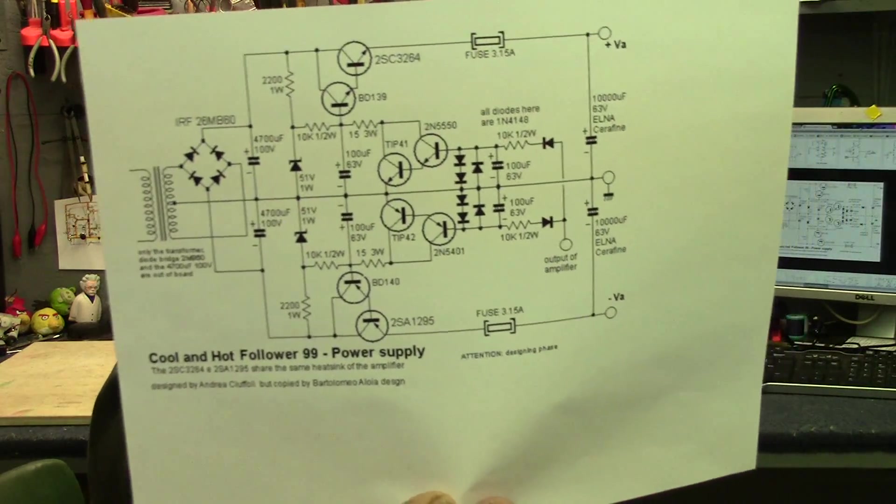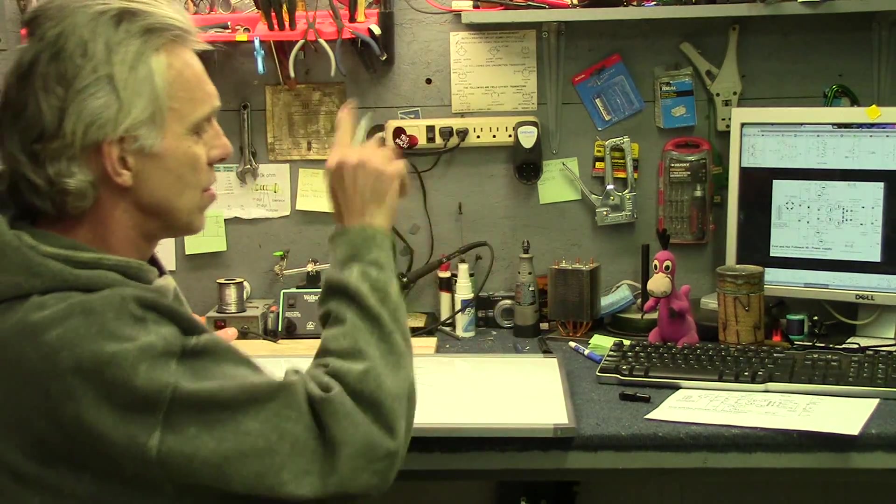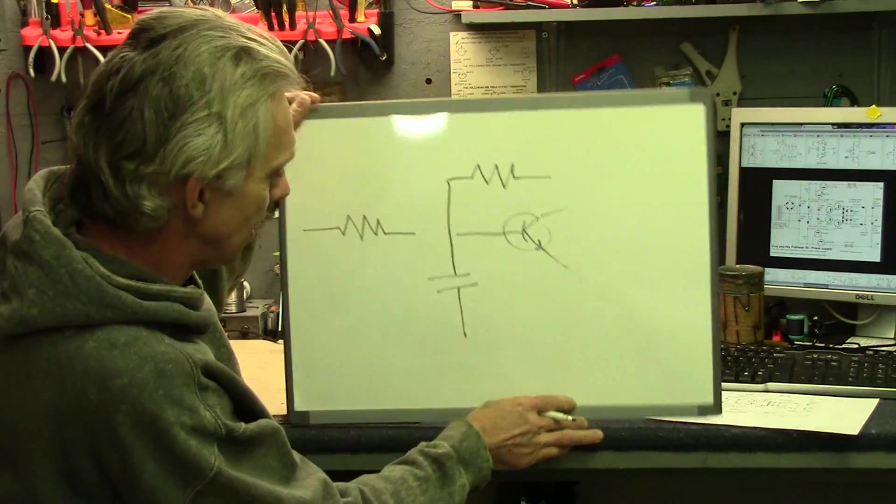You know, at first glance, a schematic can be a pretty intimidating thing to look at. For instance, here's a power supply. Now, to those of you that don't know what any of this stuff means, it just looks like a bunch of lines and silly little symbols. Well, today I'm going to show you how to read a schematic, just the basics anyway. And the best place to start out is all those lines that connect the components together.